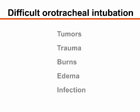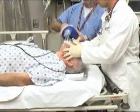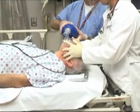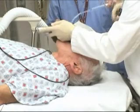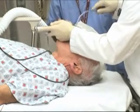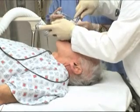The presence of tumors, trauma, burns, edema, or infection of the pharyngeal or laryngeal soft tissues may distort airway anatomy, leading to difficult orotracheal intubation. When faced with a potentially difficult airway, consulting with an experienced intubator and preparing to use an alternative intubation technique are recommended.